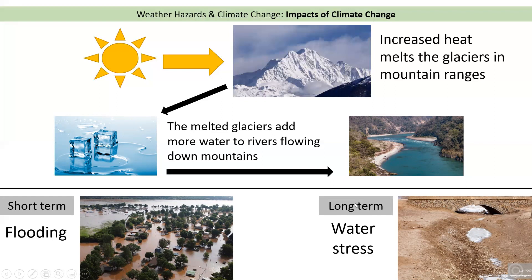However, in the longer term, if these glaciers begin to melt completely, there will actually be less water going to the rivers each year. Rivers get a lot of their water from glaciers, so in the longer term, if those rivers don't get that water from the glaciers, there may be what we call water stress — a lack of available water for the people who need it.